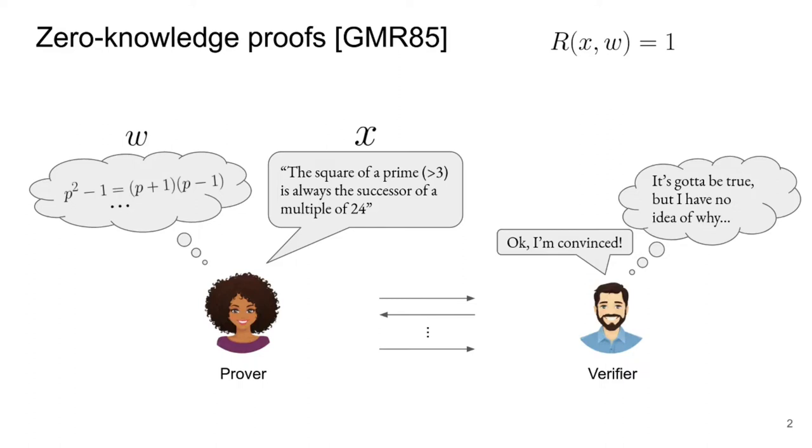A zero-knowledge proof system is said to be complete if an honest verifier always accepts after interacting with an honest prover who really knows a proof. But it must also satisfy two other properties called soundness and zero-knowledge. Roughly, soundness protects the verifier in the sense that it is impossible or extremely unlikely that he will accept a proof of a false statement. On the other hand, zero-knowledge protects the prover in the sense that the verifier will not learn any information about her proof.